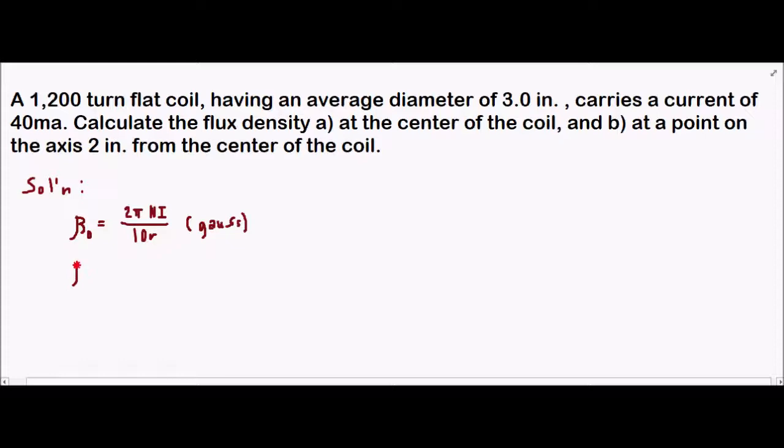Now at a certain position with respect to the center point, the formula is beta_p equals 0.2π r²NI over the square root of (a² + r²)³. The unit of this one is also in gauss.